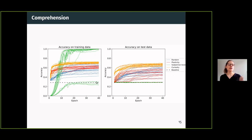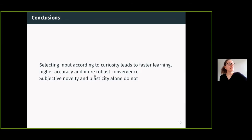What subjective novelty seems to be doing is it's very good for remembering your training data, but it's not good at all for learning anything that generalizes. Okay, that was the results. Basically, curious exploration does help learning faster, more robust, more accurate, but subjective novelty, complexity, and plasticity alone do not. Thank you.